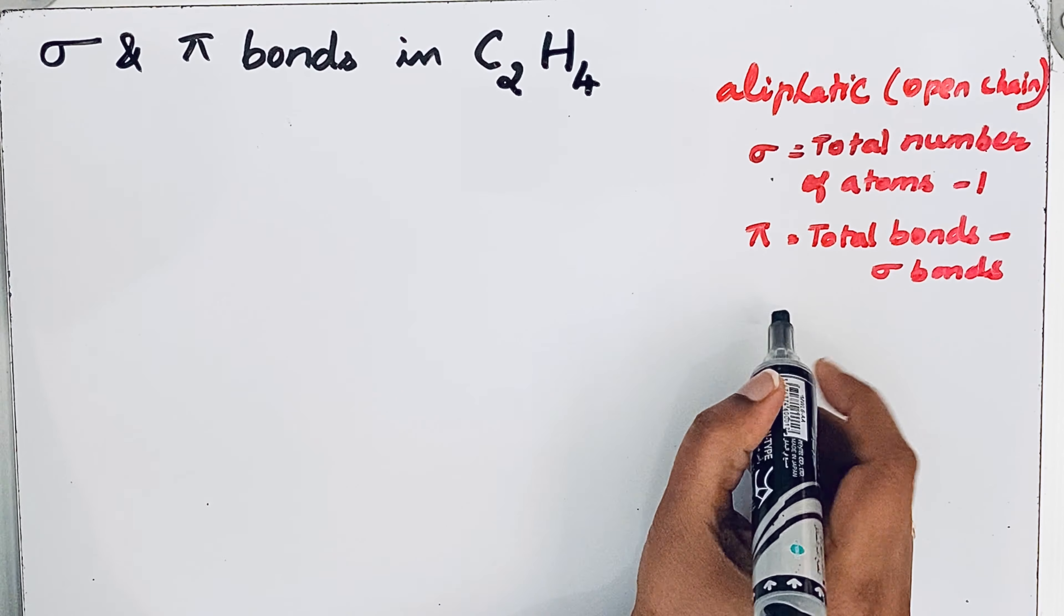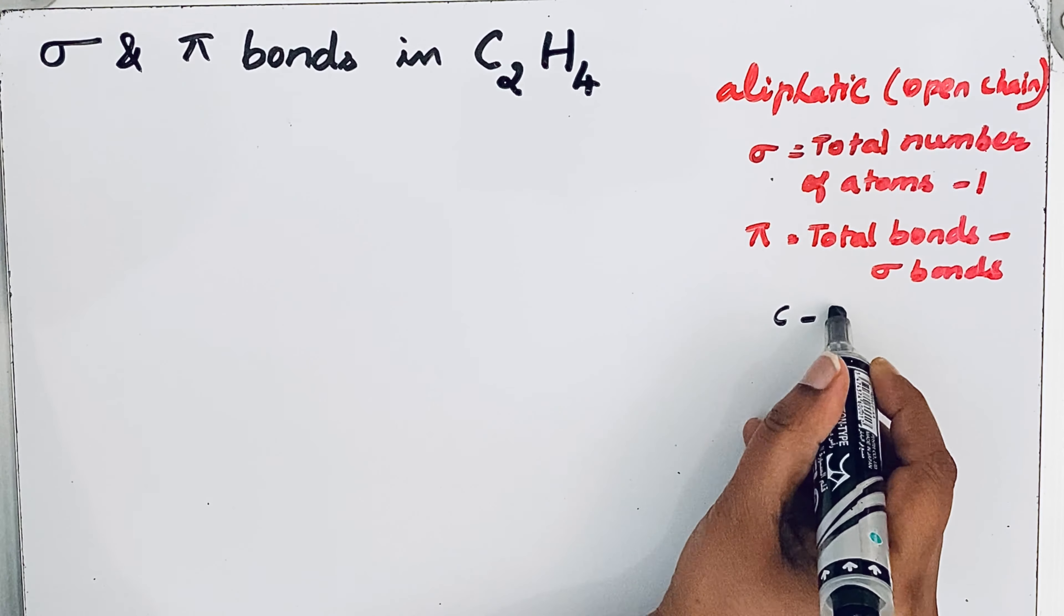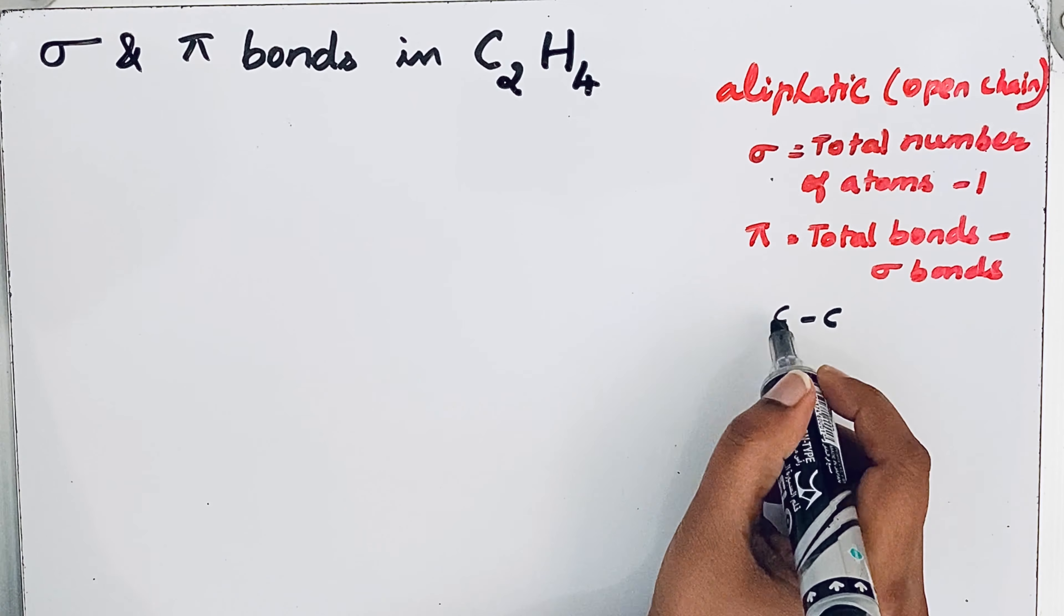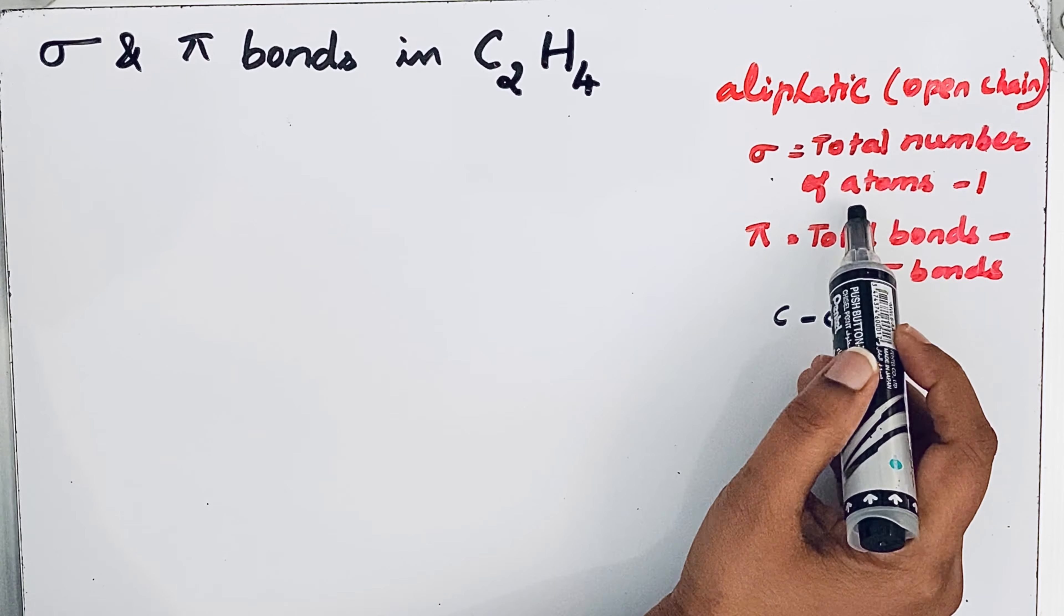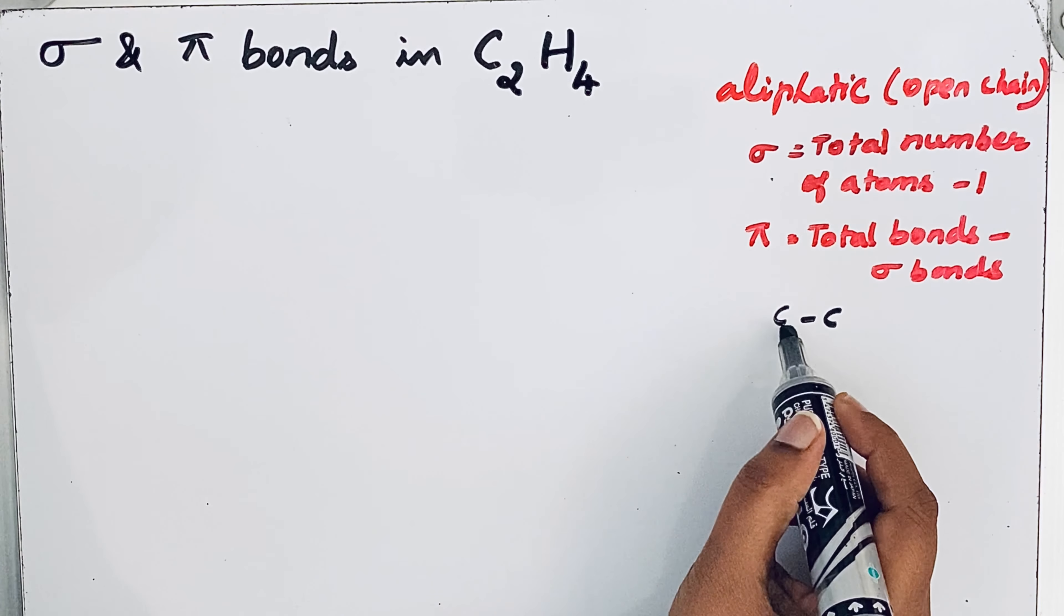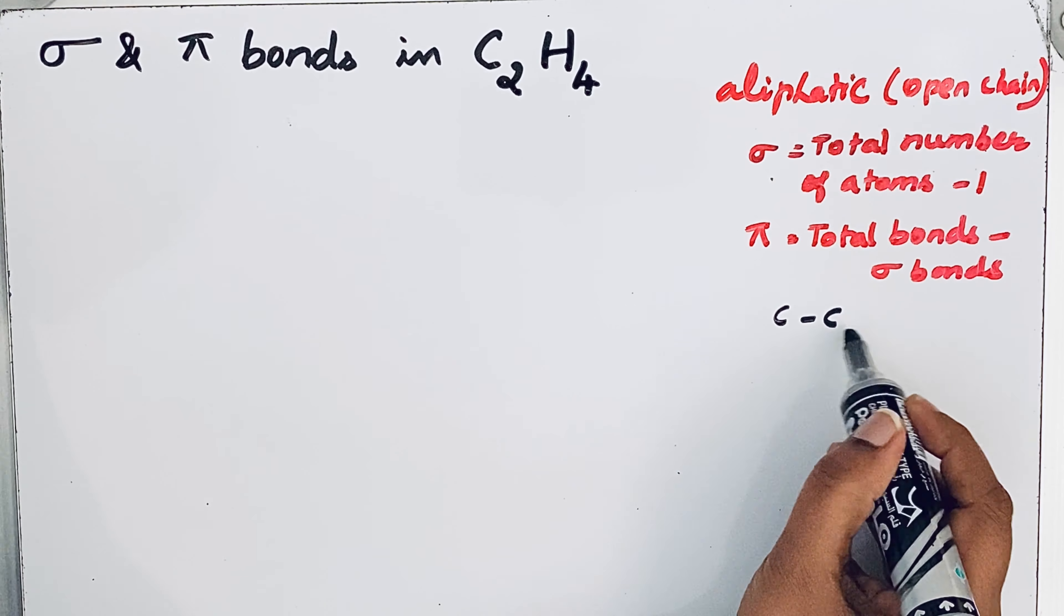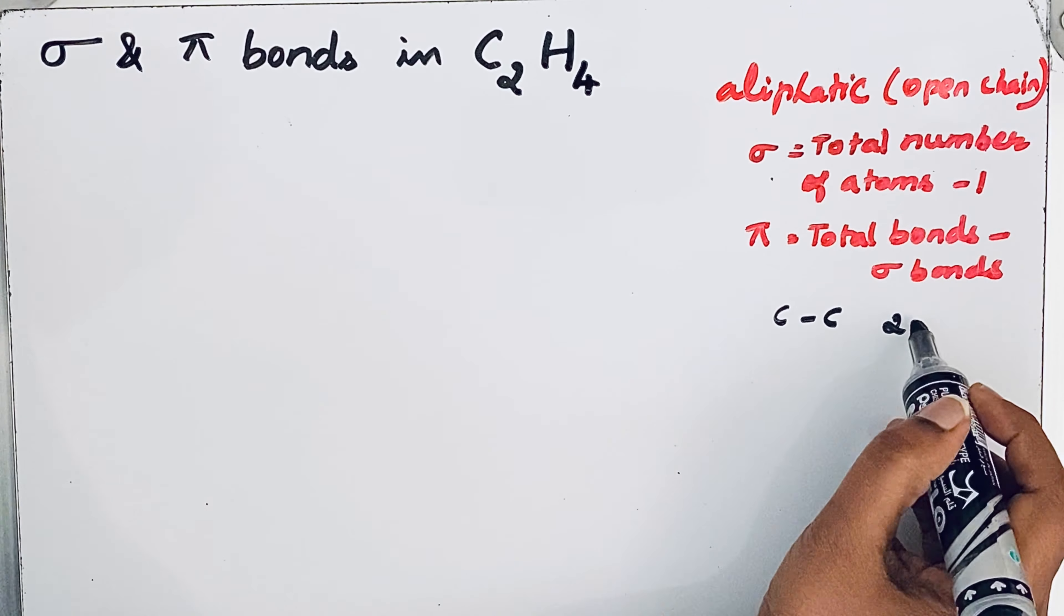For example, imagine that two carbon atoms are connected to each other. To find the sigma bonds, the formula is total number of atoms. How many carbon atoms are here? We have only two carbon atoms minus 1.